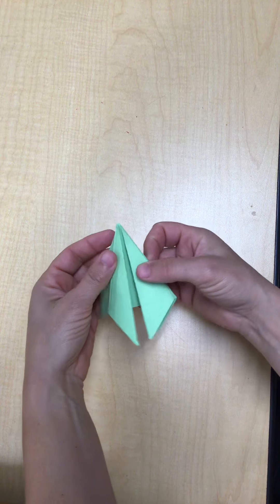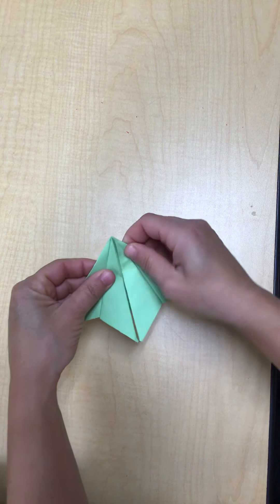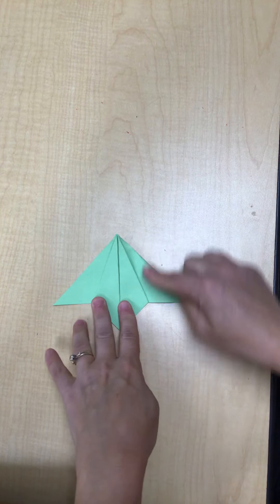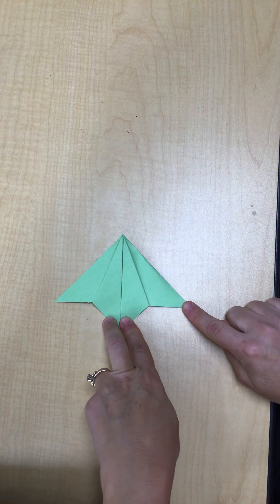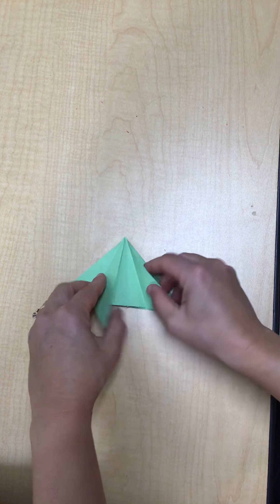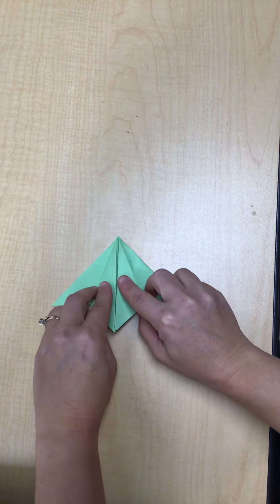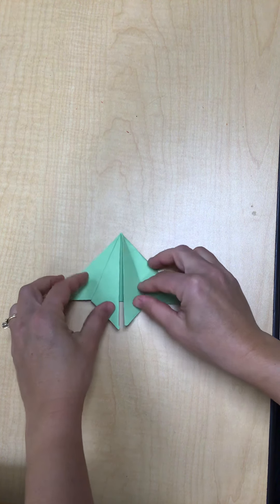If you wanted to, for fold number four, let me open it back up. So now you're back into fold three, right? You have the front triangle folded forward.